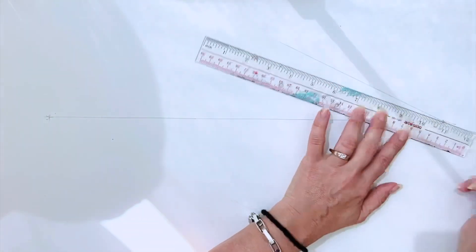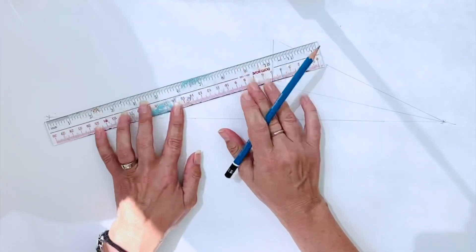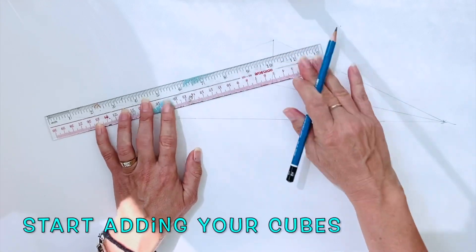Then we're going to add two vanishing points either side of the horizon line. All objects will refer to these points.